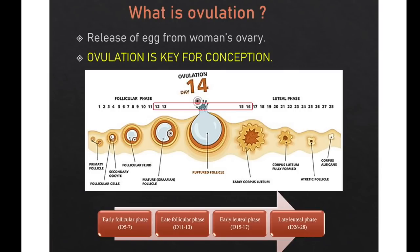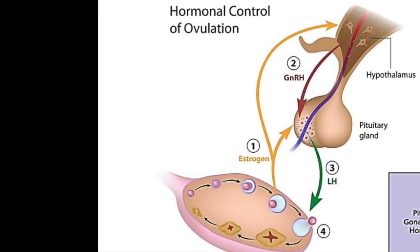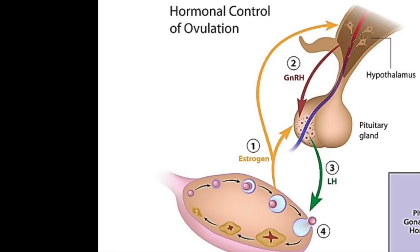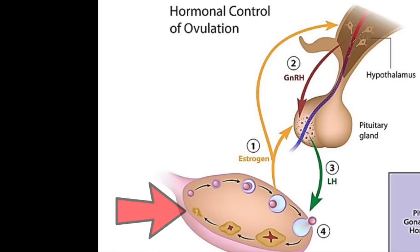To understand scanning techniques in follicular monitoring, we need to know the detailed physiology of ovulation and how these hormones work in the various phases of the menstrual cycle. Hypothalamus releases gonadotropin-releasing hormone which stimulates the anterior pituitary to release follicle-stimulating hormone. This FSH stimulates the follicle to grow and these follicles release estrogen in the form of estradiol.